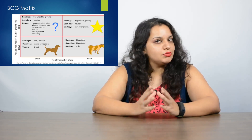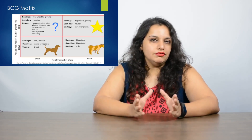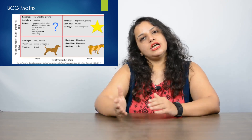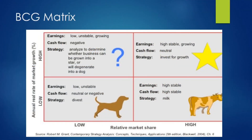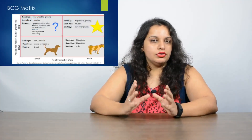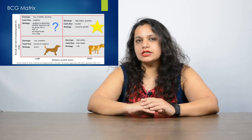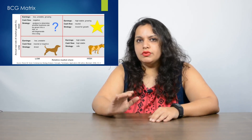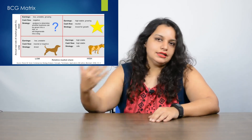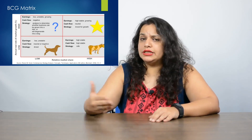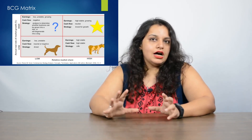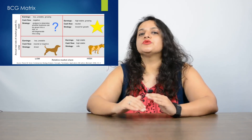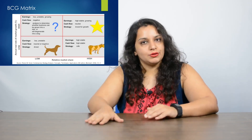The four quadrants of the BCG Matrix are given typical names which denote the type of performance a product has in a given quadrant. These quadrants are called Cash Cow, Star, Dog, and Question Mark. A Cash Cow product is one that gives the company sustained revenue with very minimal growth. Just as a fully grown cow continues to give milk for a sustained period, Cash Cow products are a typical way for a company to maintain its position and brand in a given market.